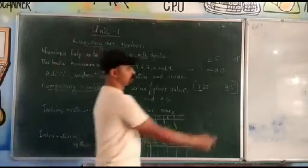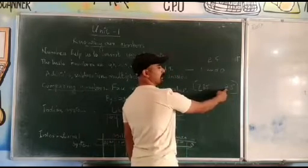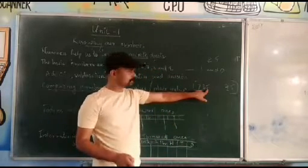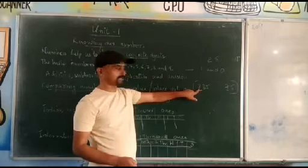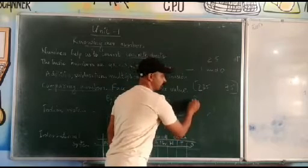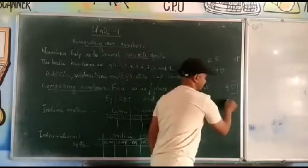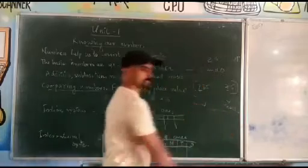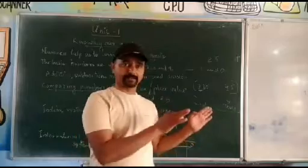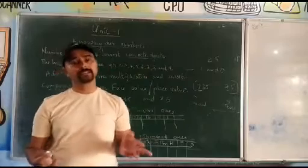In the number 735, the place value of 5 is 1 (ones place), the place value of 3 is 10 (tens place), and the place value of 7 is 100 (hundreds place). The face value of any digit is always the same wherever it appears, but the place value depends on its position. For example, 7 in the hundreds place has a place value of 700.